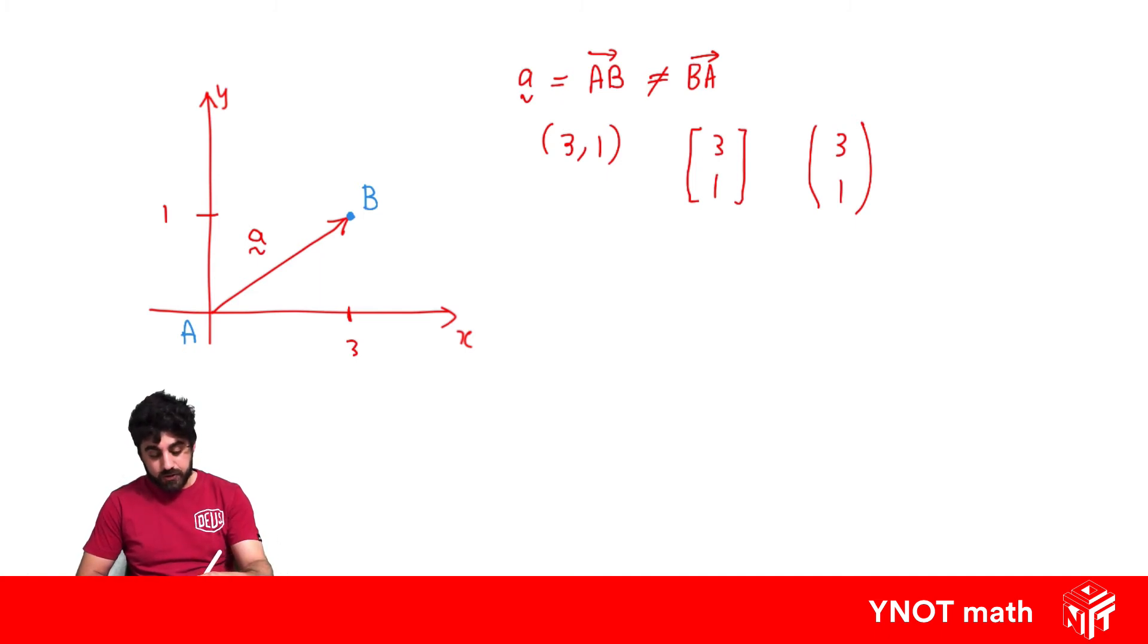Later we're going to see you can actually also write the vector as 3i plus 1j, and this is called the component form, but we're going to look more at this later in another video.